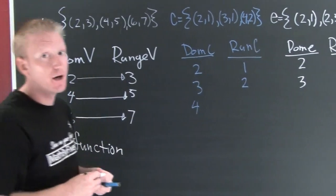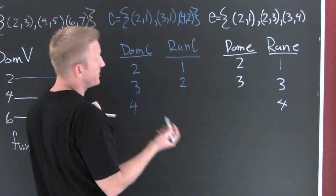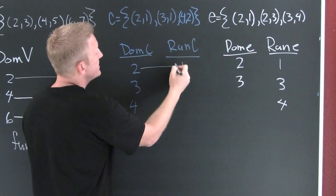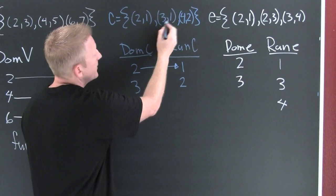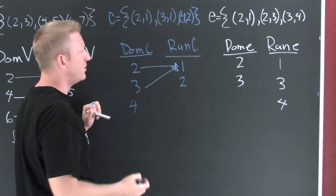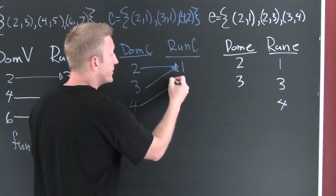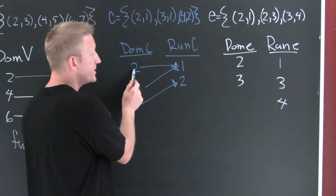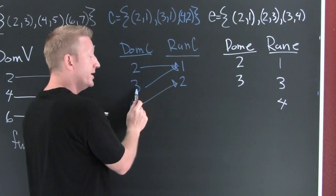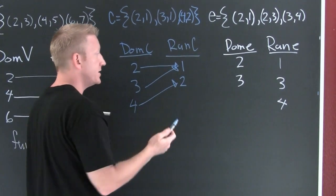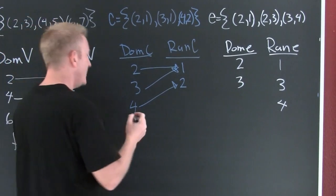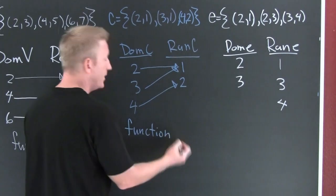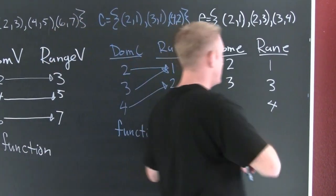A relation is a function if each first element goes to exactly one second element. For relation C: two goes to one, three goes to one, and four goes to two. Does each first element go to exactly one second element? Two only goes to one, three only goes to one, and four only goes to two. Yes, this is a function.